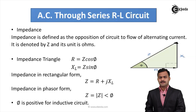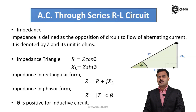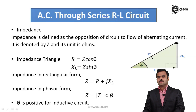Impedance is defined as the opposition of a circuit to the flow of alternating current, denoted by Z, with unit ohm — just like resistance. In the voltage triangle, dividing all sides by I (which is constant in a series circuit), we get the impedance triangle with sides R, XL, and Z. From the impedance triangle: R = Z cos φ and XL = Z sin φ.